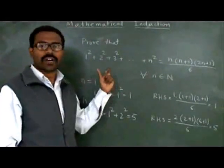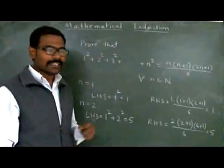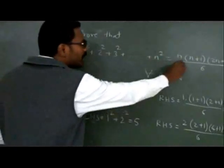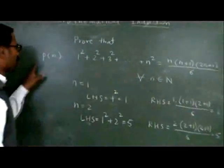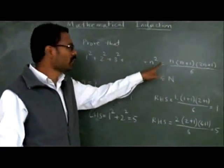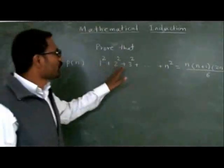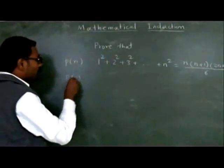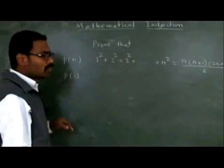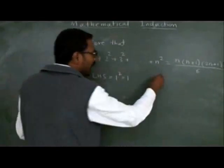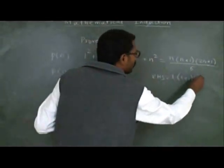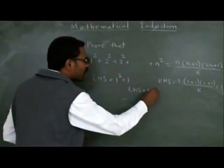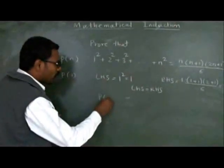Now we start to explain what exactly is mathematical induction. From this formula, let's say the statement is P(n). P(n) is the statement that 1² + 2² + 3² + ... + n² = n(n+1)(2n+1)/6. For P(1), substituting n=1: LHS = 1² = 1, and RHS = 1 × 2 × 3 / 6 = 1. So LHS equals RHS, and we say P(1) is true.